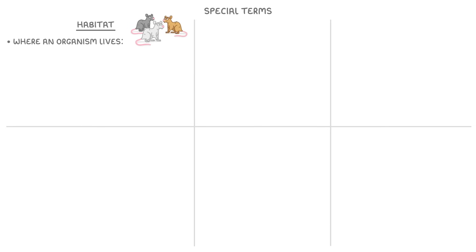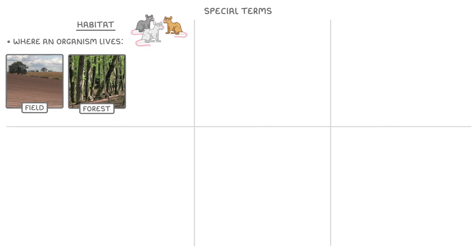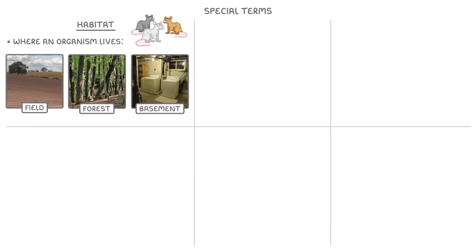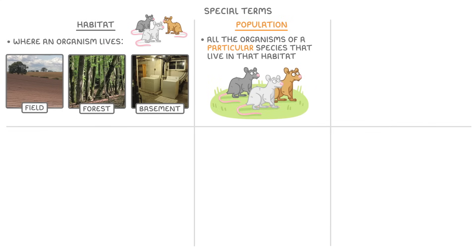So for our mice, that could be a field, a forest, or somebody's basement. Meanwhile, a population is all of the organisms of a particular species that live in that habitat — so, all the mice that live in the field.